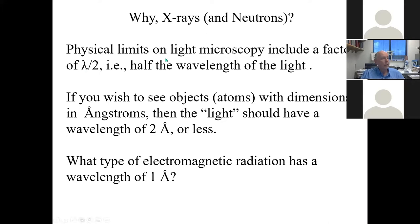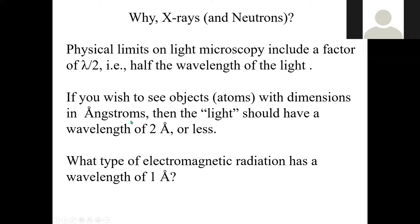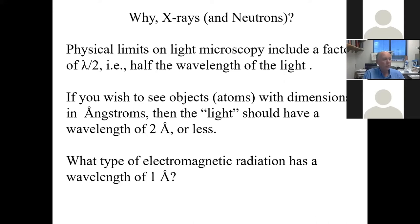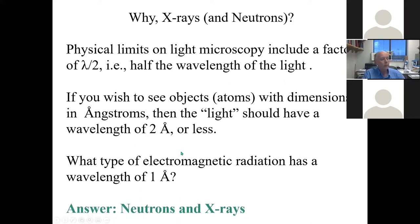For light of a 400 nanometer wavelength, we're limited to about 200 nanometers resolution. We can't see anything smaller than that because things less than 200 nanometers in size will not interact with visible light. So if you want to see objects or atoms that have dimensions in angstroms, you need a different kind of light — one with a wavelength of two angstroms or less. So what type of electromagnetic radiation has a wavelength of an angstrom?